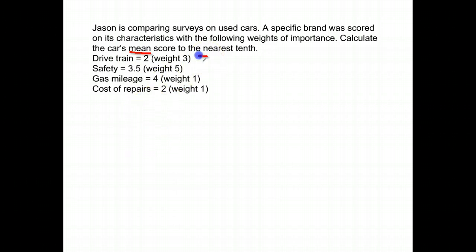But notice next to them, they each have weights. This is a weight of three. This is a weight of five. This is a weight of one. And this is a weight of one. Which means that since this is a weight of one and this is a weight of five, it's five times more important. The safety is five times more important than the cost of repairs. This one up here, weighted three. The drive train, they determine it is three times more important than the cost of repairs or the gas mileage. That's what they've determined here. So that's what we're going to use.